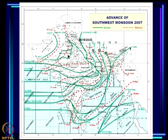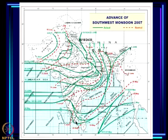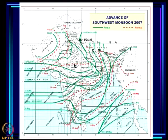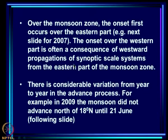From 15th to 30th June it came further west, and by 4th July it reached its destination. So the advance of the monsoon occurs by northward movement up to a certain point, then westward movement from there onwards. This is the way the advance of the monsoon takes place, as illustrated by this 2007 example.